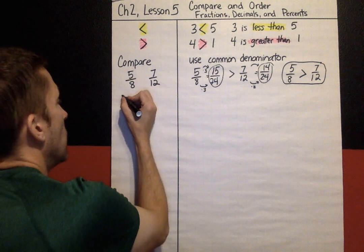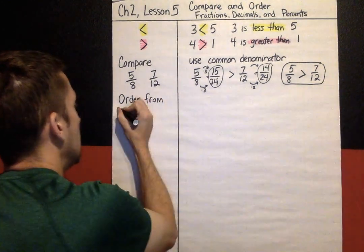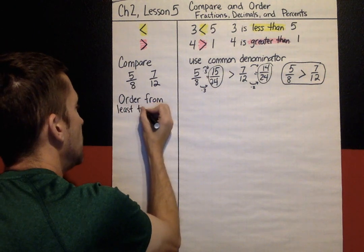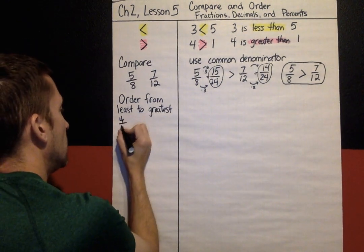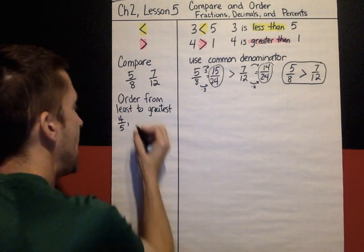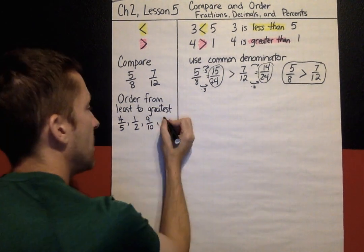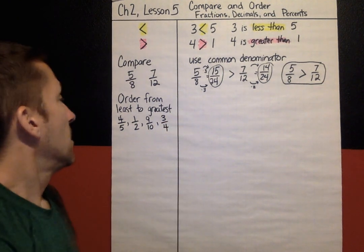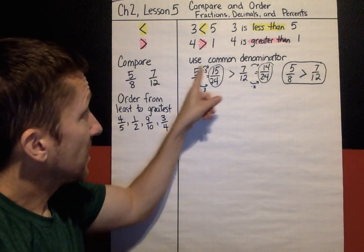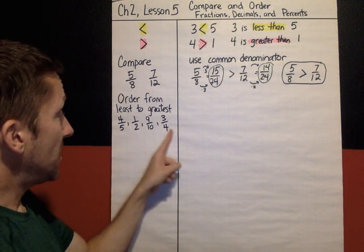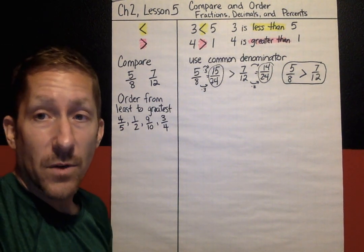Let's look at an ordering problem. How would we order from least to greatest the following fractions: four-fifths, one-half, nine-tenths, and three-fourths? I'm going to use the common denominator strategy. I'm looking at all the denominators: five, two, ten, and four. A good resource would be your multiplication table.